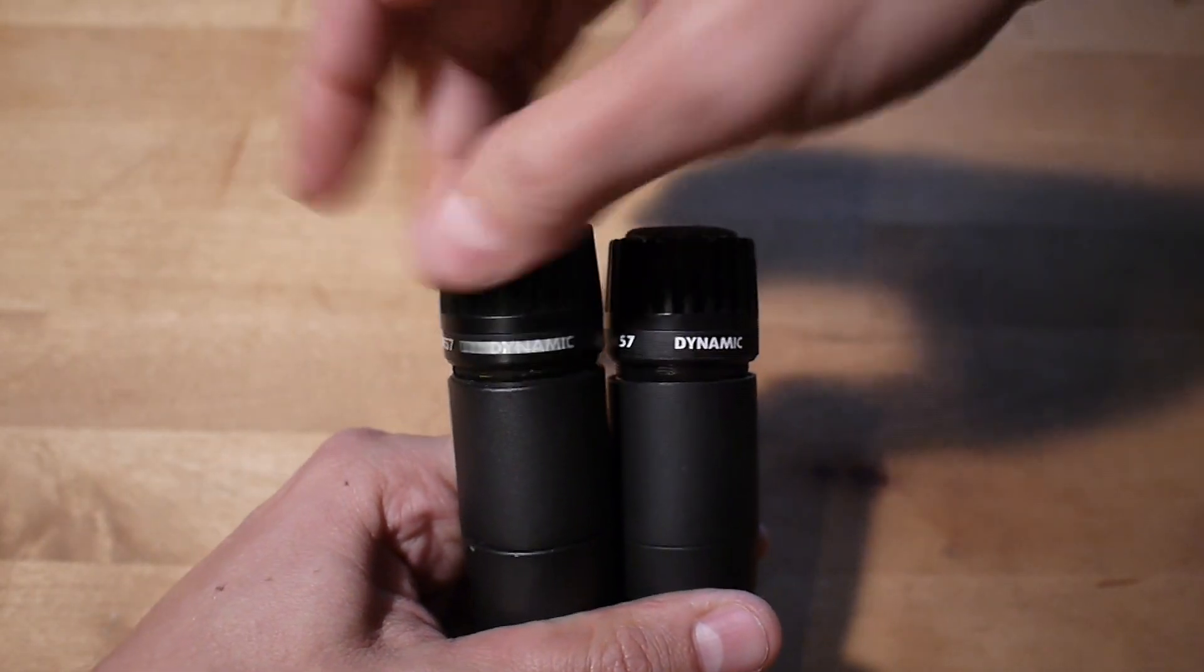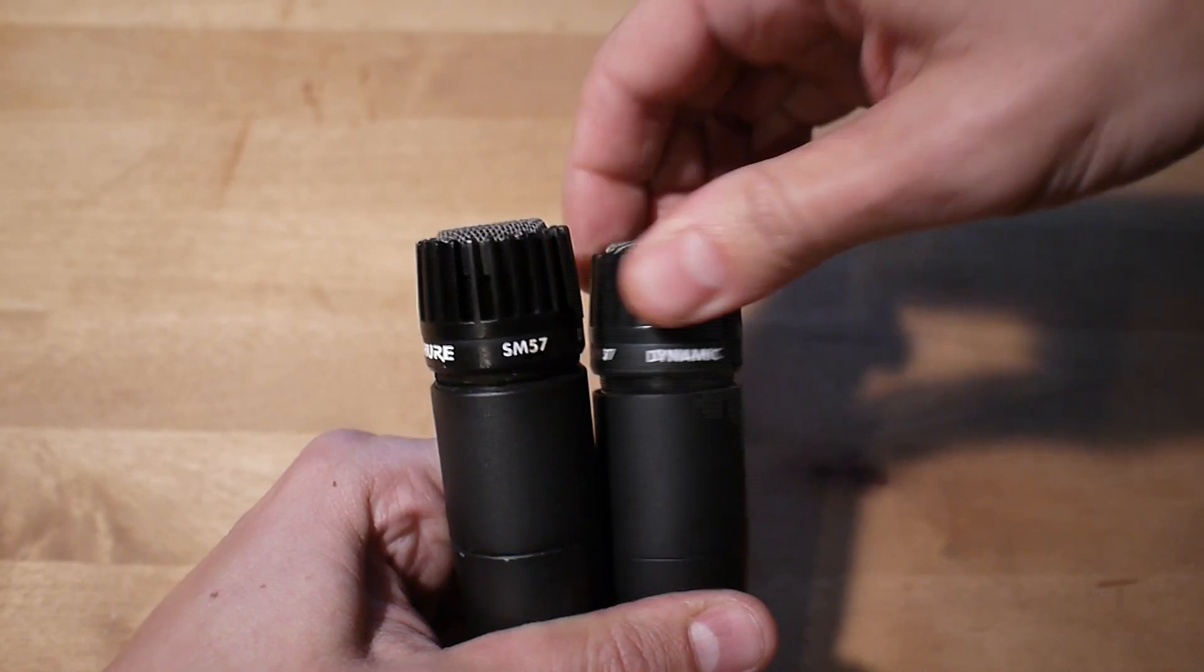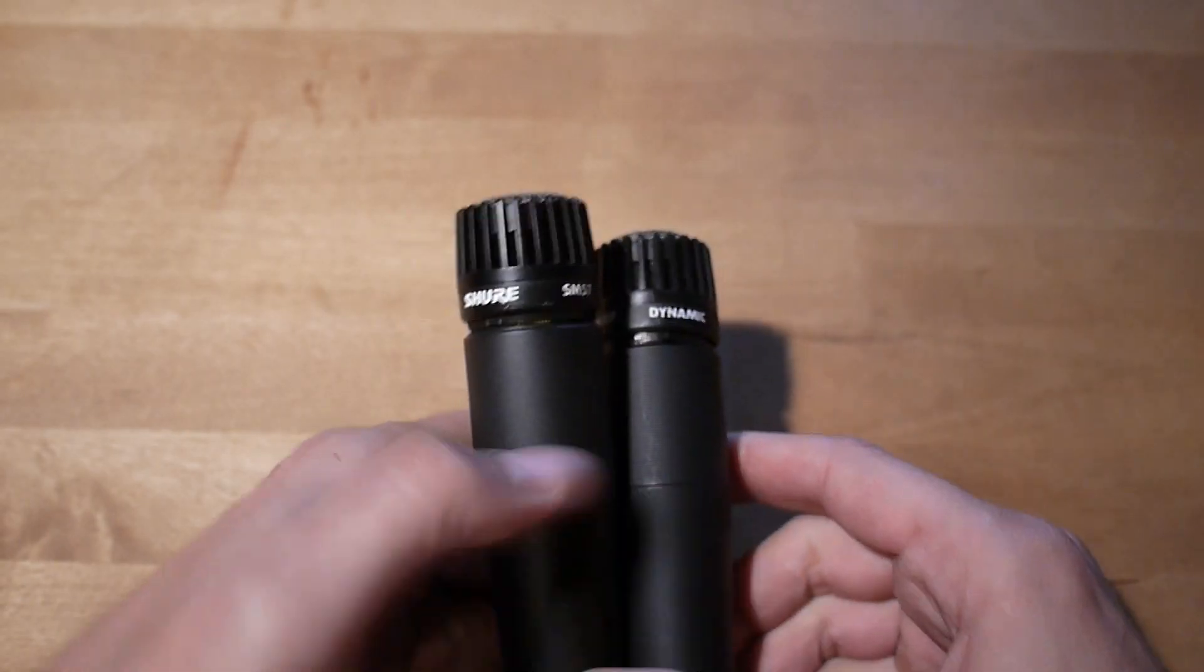But here's one. Here's the real one. Spins around completely. This does not. So you turn this, the entire capsule spins and will break a wire.